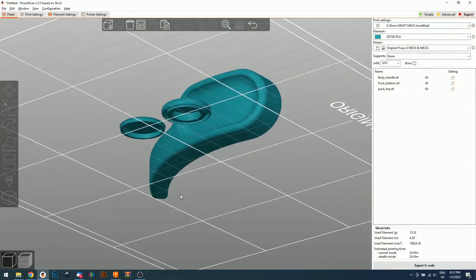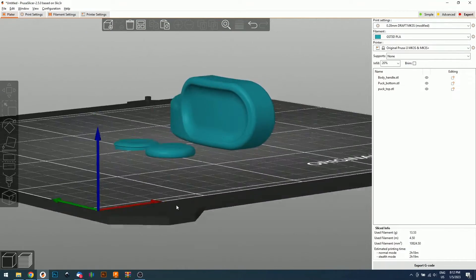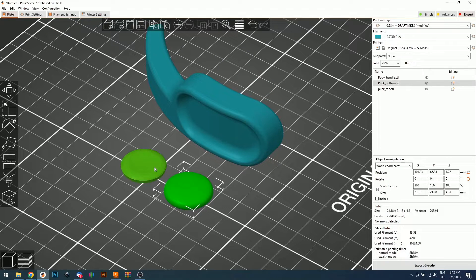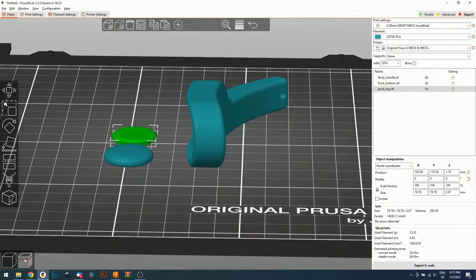When you load the files into your slicer, they will be correctly oriented. You don't have to change the orientation. This will print just fine without supports so keep that in mind. This will print perfectly fine like this.